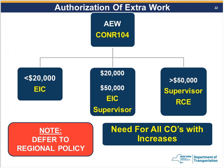The AEW has dollar thresholds that determine required signatures: under $20,000 requires only the EIC; $20,000–$50,000 requires the EIC and supervisor; over $50,000 requires the supervisor and the Regional Construction Engineer. Note that regional policies may be stricter — in Region 2, all AEWs require at minimum both the EIC and supervisor signatures regardless of value.